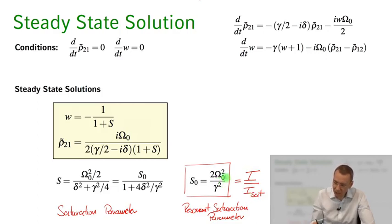And again remember it's the ratio of coherent drive, Rabi frequency, divided by damping. All right.